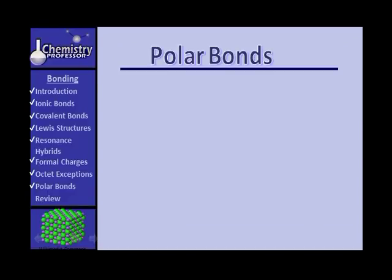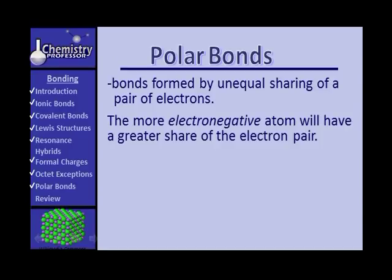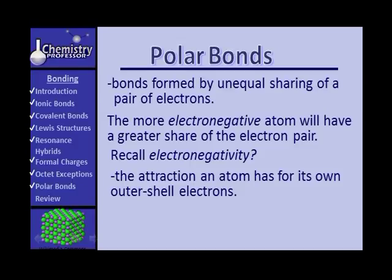Now let's look at polar bonds. You've heard of polar bonds before. These are bonds formed by the unequal sharing of a pair according to the model that we're working with. The more electronegative atom will have a greater share of the electron pair. Do you remember what electronegativity is? We talked about it as the attraction of an atom for electrons.